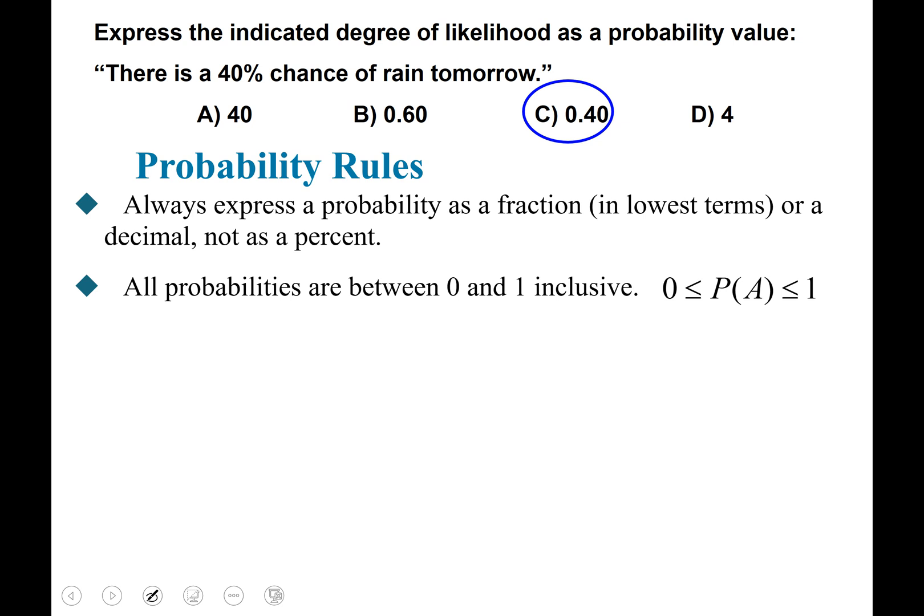I like to think of it as the percentages go from zero percent to one hundred percent. So if you were to change these to decimals it'd be between zero and one. So all probabilities will be between zero and one inclusive.